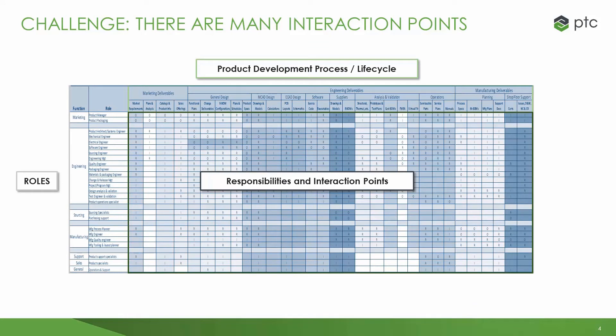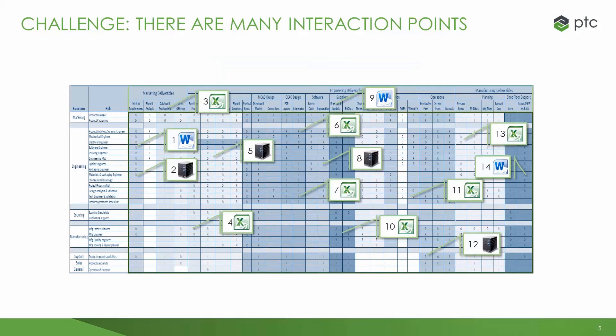If you were to map out all of the roles across all the different processes, you'd create quite a matrix of intersection points. Today, many companies struggle with sharing information across these points of intersection, due to all the different systems and tools and data types that are used. This creates many challenges, such as manual translation of data, updating of multiple spreadsheets, not knowing which is the latest version, etc. One customer that we spoke to told us they had 29 different spreadsheets across these functions.